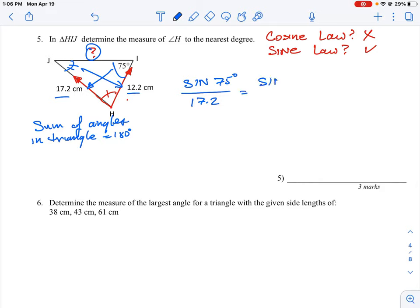And that's going to be equal to sine j, which is the angle of j that we don't know, but it's opposite the side of 12.2. So we just do some simple cross multiply. And we're going to isolate the variable, which is sine j by itself. So we will go 12.2 times sine of 75, divided by 17.2 is equal to sine j.